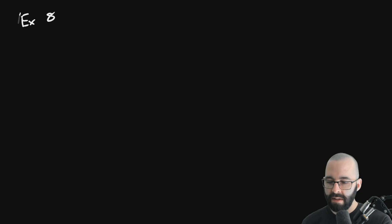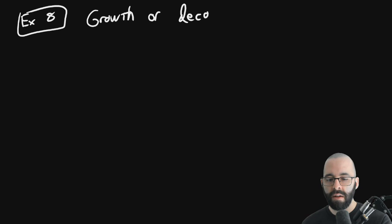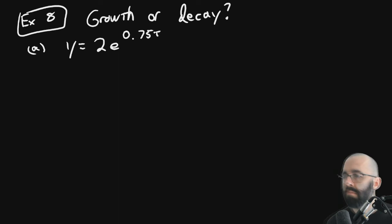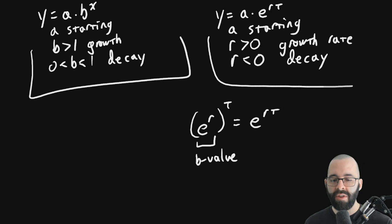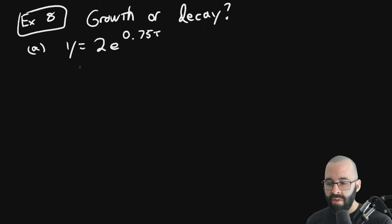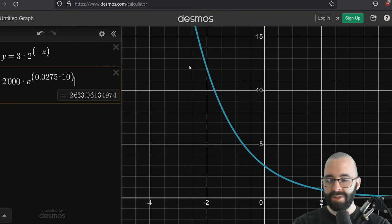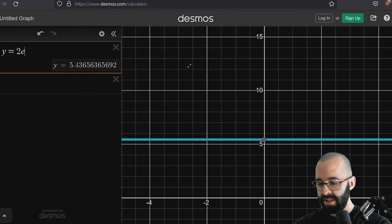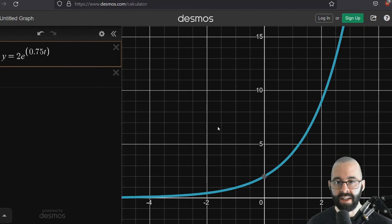Example 8. Growth or decay. Part A. Y = 2e^(0.75t). The main thing here is just to not get these two things confused. Do not get this confused with this. One, it matters whether B is bigger than one or less than one. And the other, it matters whether R is positive or negative. So just have your notes clear. And you can always check your work on Desmos. Right? R is positive here, so we know it's growth. Let's check our answers. Does this look like exponential growth? Y = 2e^(0.75t). Yeah, as we move from left to the right, we're getting bigger. We're going uphill. Growth.